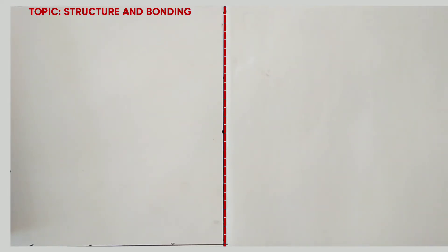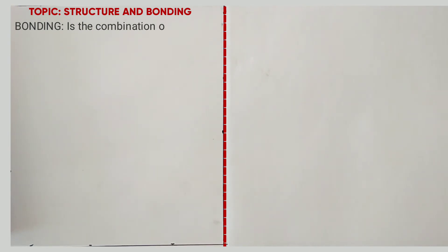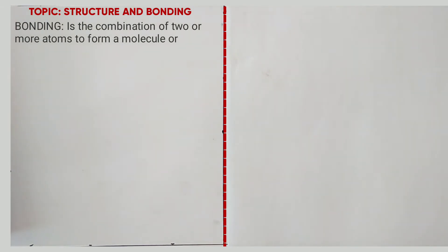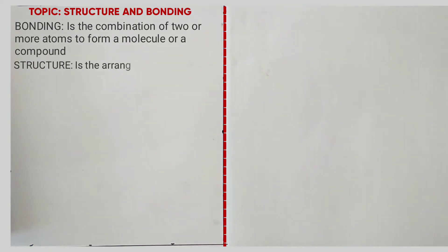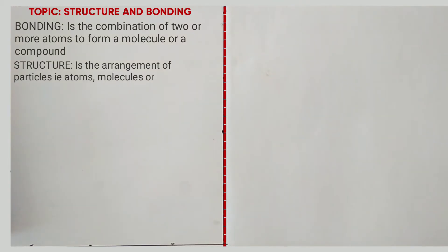We begin by looking at what is bonding. Bonding is a combination of two or more atoms to form a molecule or a compound. Structure is the arrangement of particles, i.e. atoms, ions or molecules in a regular pattern.